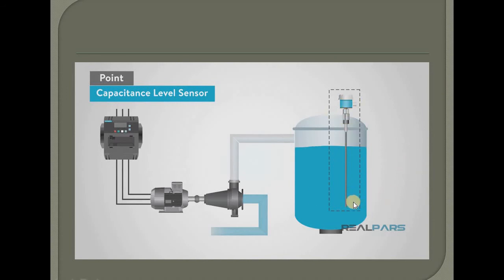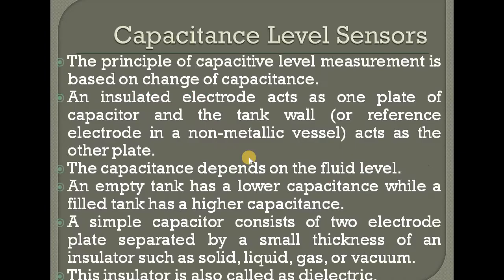In our tank we have a capacitance transducer. It is used at high level. The working principle is based on the principle of capacitance — specifically, a change in capacitance. An insulated electronic probe acts as one plate of a capacitor.